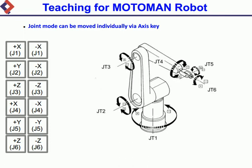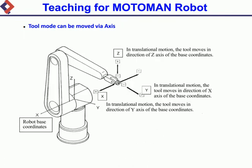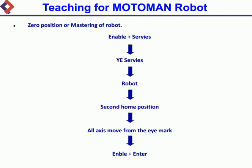Tool mode: the robot can be moved via axis key. Zero position or mastering of robot: Enable and survey, Yes, survey robot. Second home position: all axes move from the I mark. Enable and Enter.